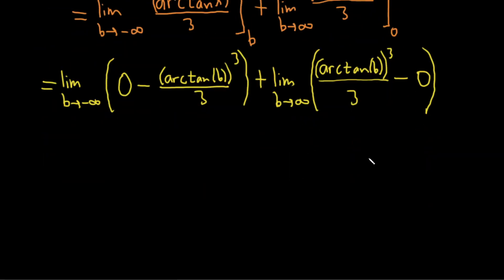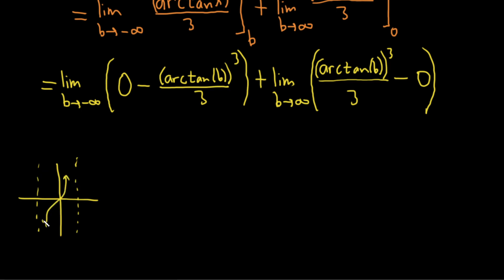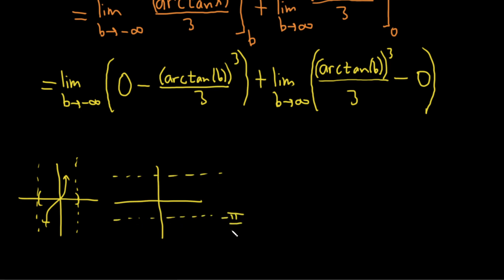To finish this problem you should know the graph of arctangent. Remember the graph of tangent has asymptotes at negative pi over two and pi over two. Arctangent is the inverse, so if you restrict tangent to the interval from negative pi over two to pi over two and reflect across the y-axis, you get the arctangent graph, which has horizontal asymptotes at negative pi over two and pi over two.